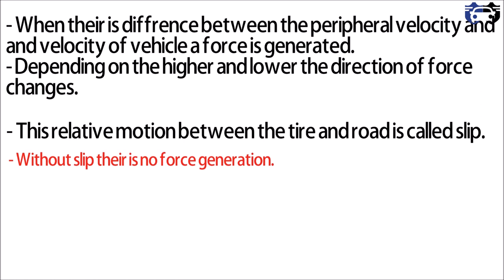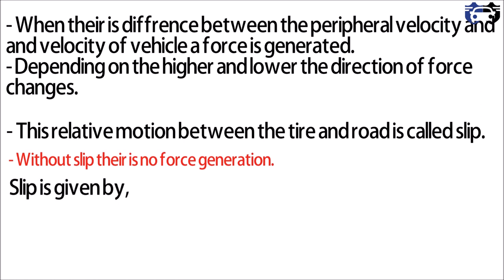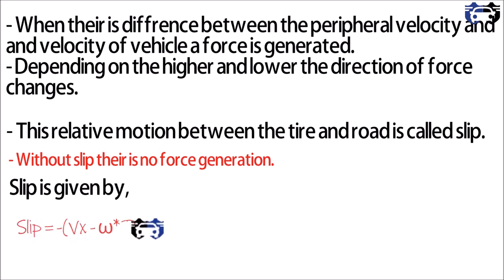Slip is given by: slip = −(vx − omega × rw) / vx, where vx is the forward velocity of the vehicle, omega is the angular velocity, and rw is the rolling or effective radius.